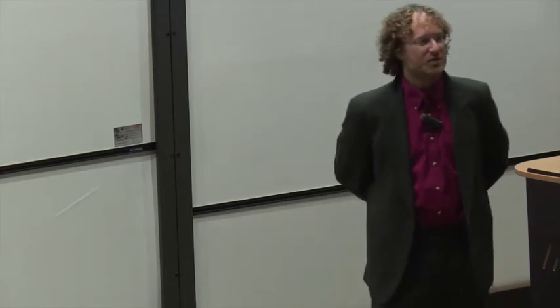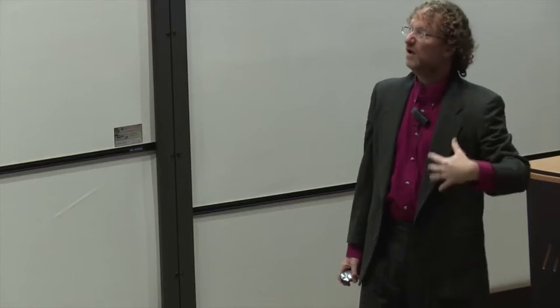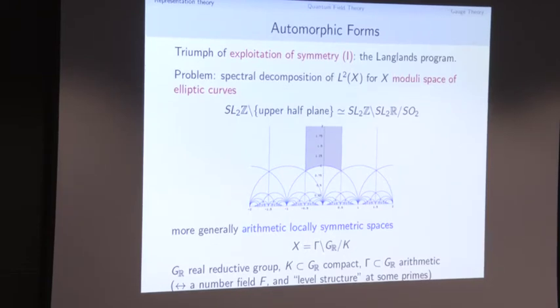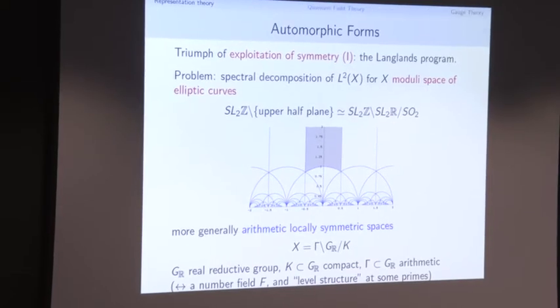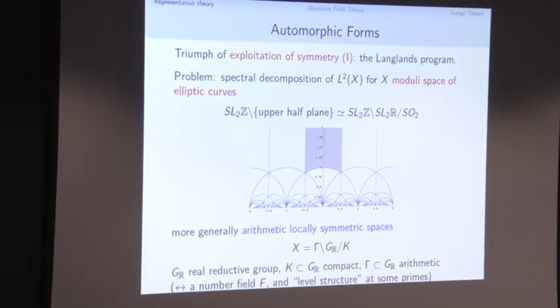The Langlands program in two slides. The general problem: we're going to try to solve a spectral decomposition problem like we did on the two-sphere, but now on the upper half-plane modulo SL(2,ℤ) — the moduli space of elliptic curves. We can write it as upper half-space modulo SL(2,ℤ), or spell it out as SL(2,ℝ) modulo its maximal compact SO(2), then modded by SL(2,ℤ). More generally, we look at classical arithmetic locally symmetric spaces with a real reductive group, a compact subgroup, and an arithmetic subgroup Γ labeled by some arithmetic data: a number field, a level structure.